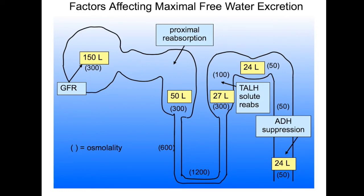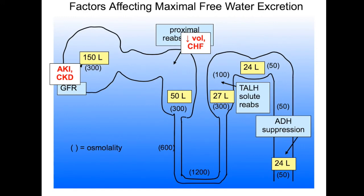So what can go wrong to put a person at risk for developing hyponatremia? Remember that in order to prevent hyponatremia, you have to be able to excrete solute-free water. You will have trouble doing this if you don't have enough filtrate to start with, such as with AKI or CKD. Or if you reabsorb too much proximally and don't have enough left to make dilute urine, as with sodium-retaining states such as volume depletion and heart failure, which activate the renin-angiotensin and sympathetic nervous systems, increasing proximal reabsorption. Or if you can't reabsorb solute in the thick ascending limb to make a dilute urine — for instance, if your solute transporters are disabled by a loop diuretic.